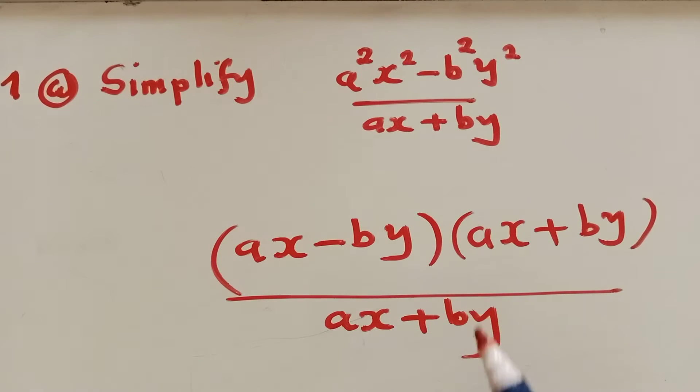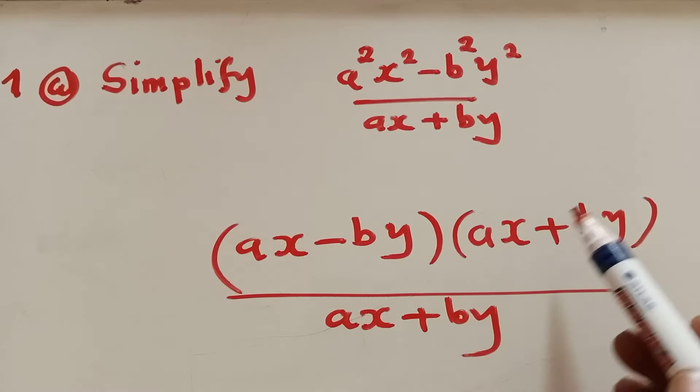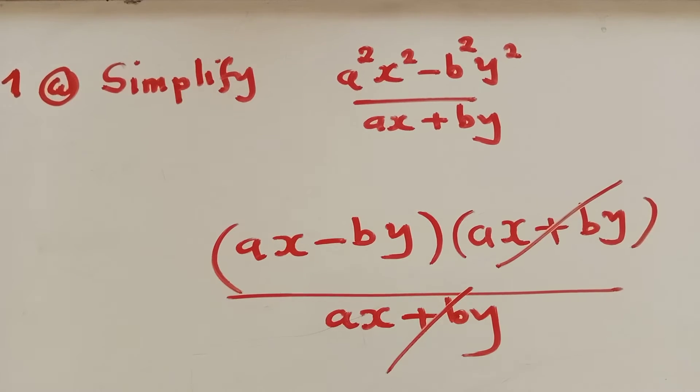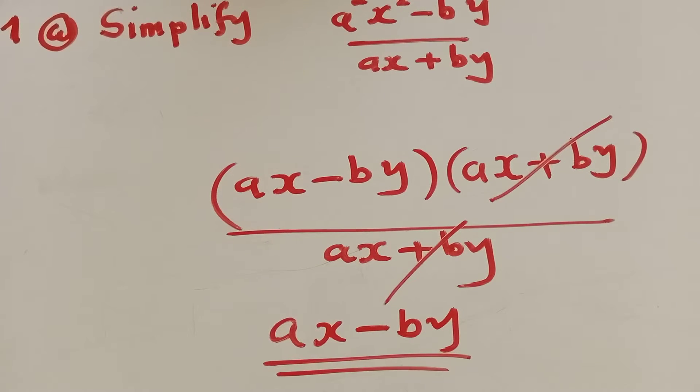What is down here? So our next step here would just be to cancel what is common. This and this can cancel. We'll remain with ax minus by. And this is our solution. We go to question b.